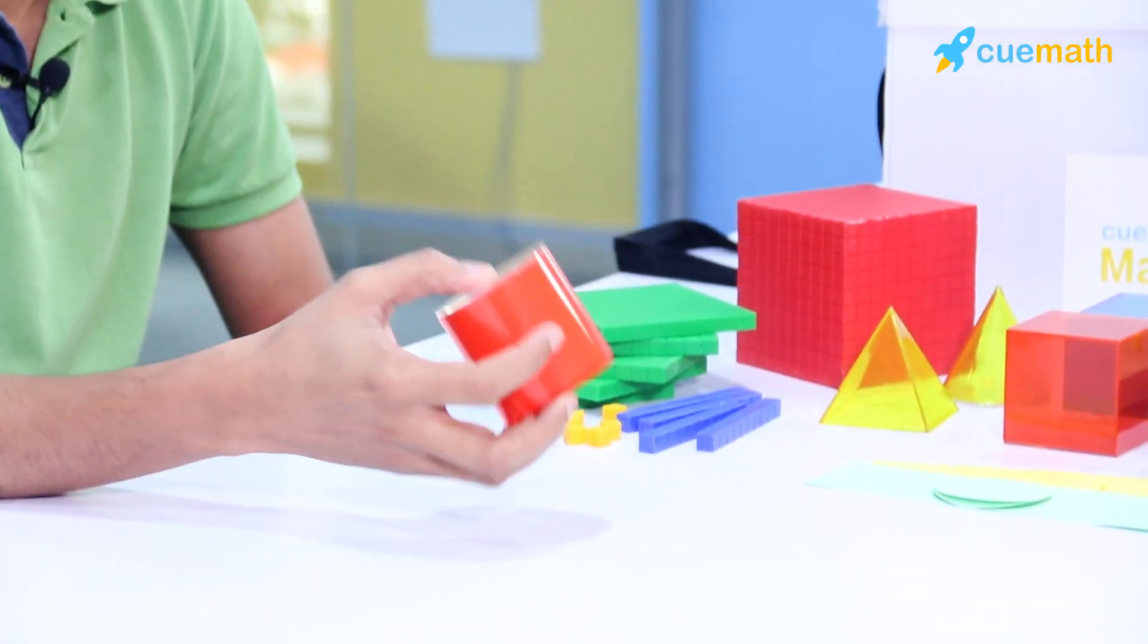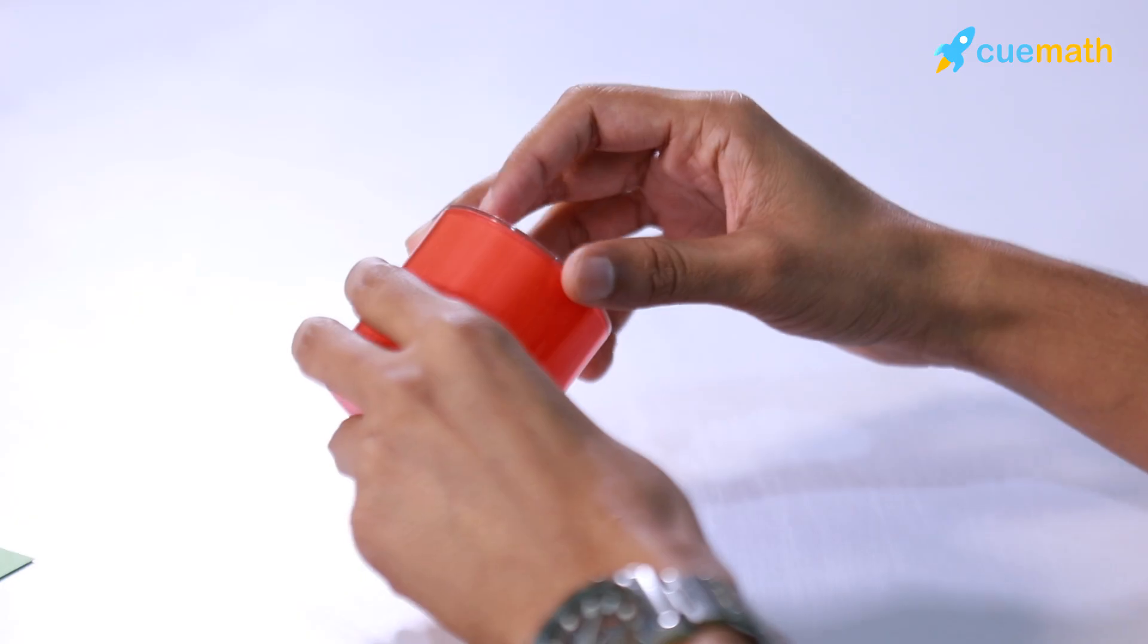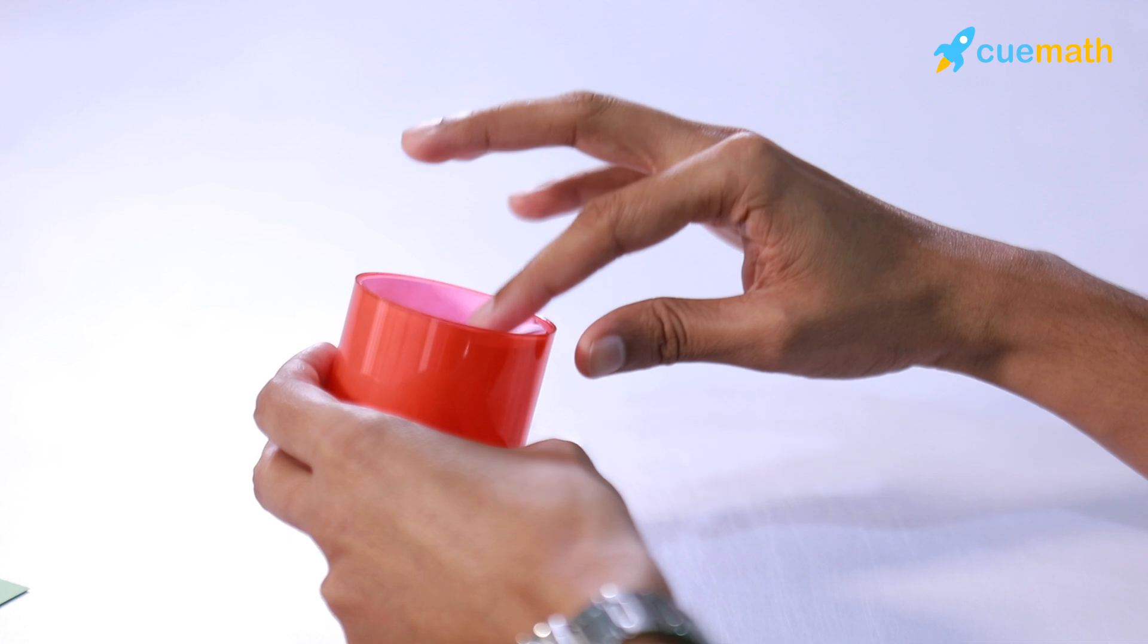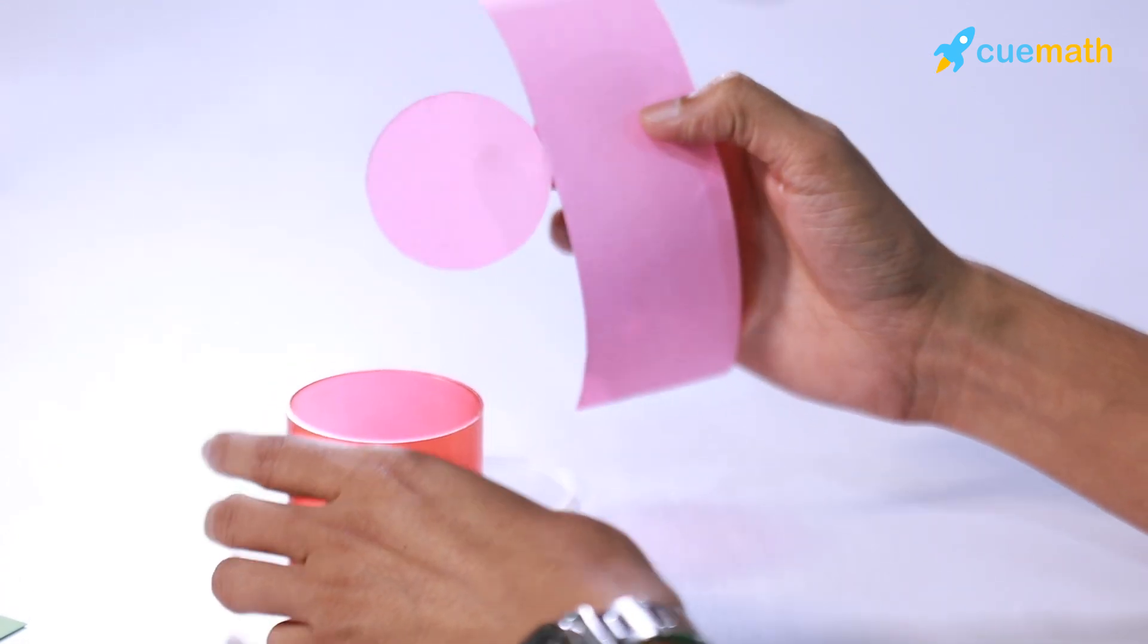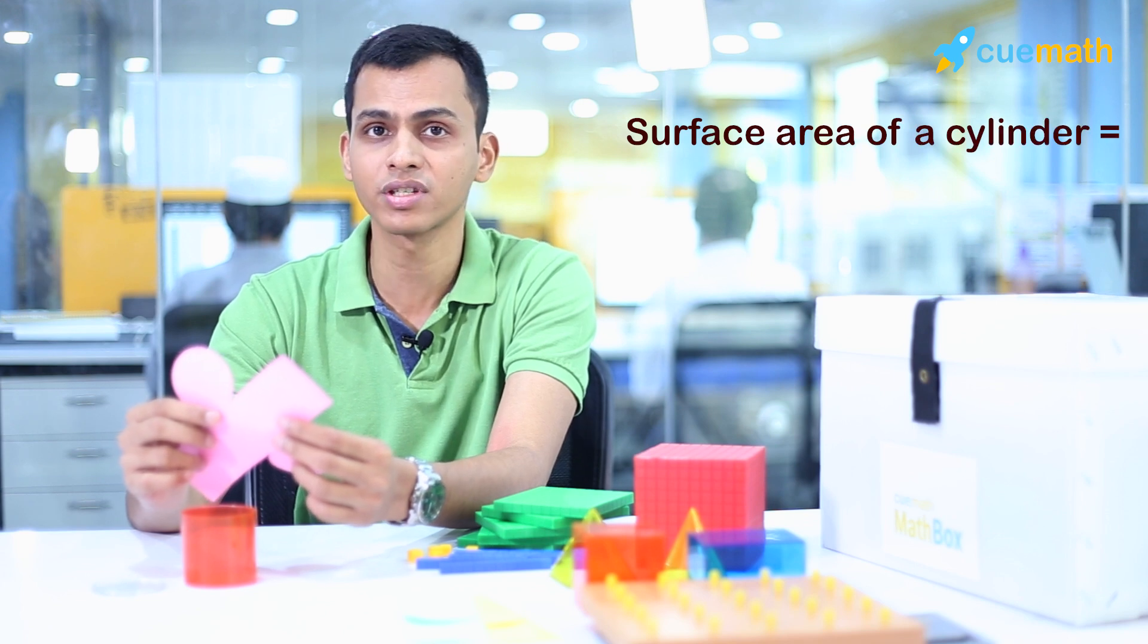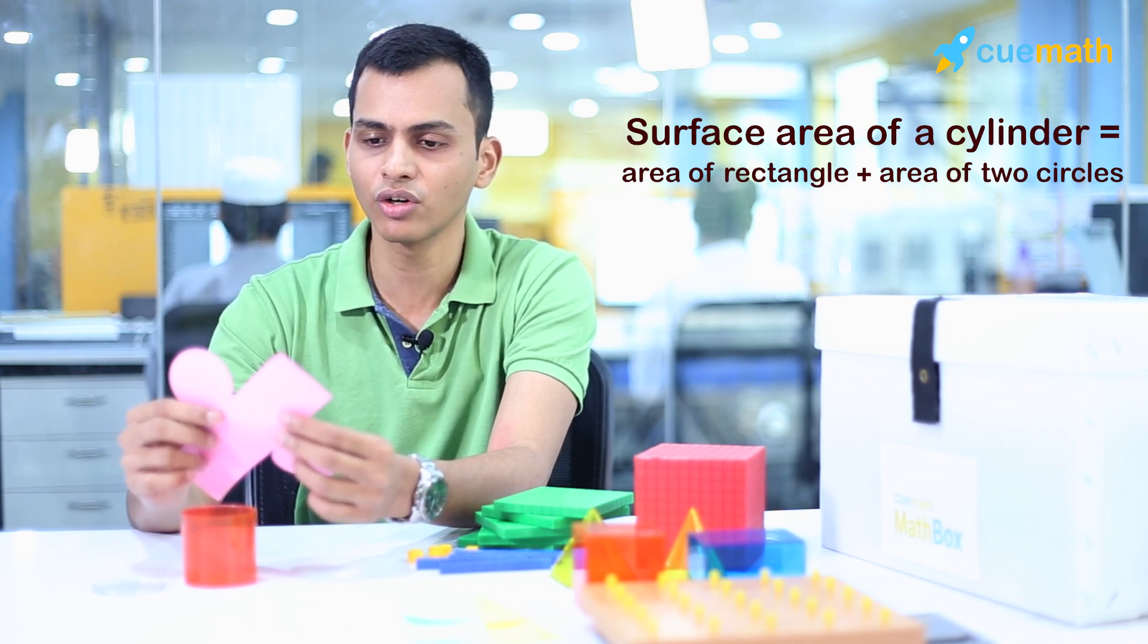So how would a Cuemath teacher go about helping a student discover this formula? Kids are given this to really understand how the shape works. So here you see that the cylinder is actually composed of a rectangle and two circles.